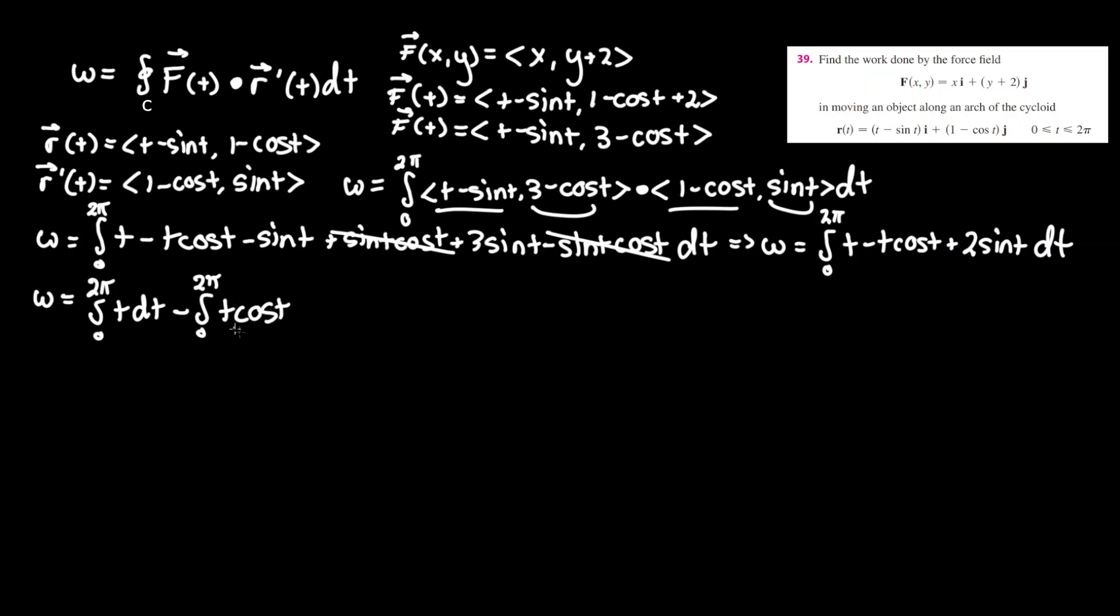You can see this will be evaluated by doing parts, there's no other way to do it, dt plus integral between 0 and 2pi of 2 sine t dt. Once we figure this out, we have our answer.